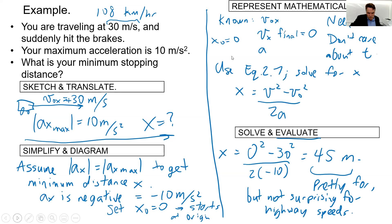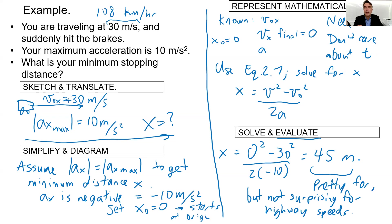A question: why is acceleration negative here? The direction of acceleration is determined by whether the object is speeding up or slowing down. If slowing down, acceleration is opposite the direction of velocity. I defined the initial velocity as positive, so the acceleration must be negative to slow it down. Also: you definitely need units in your final answer, though I often leave them off in calculations.